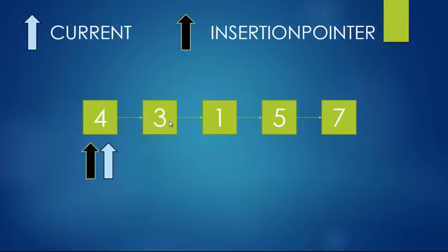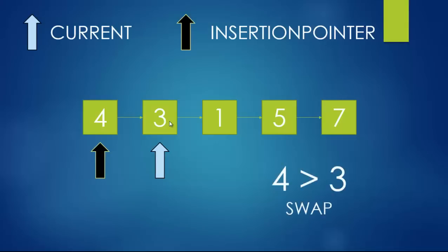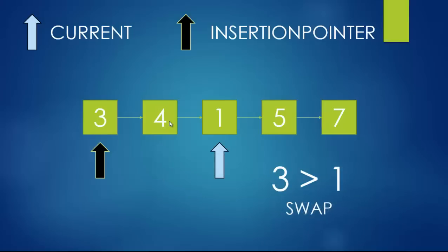What happens next is I initially increment current by one, which means I make current point to three, while the insertion pointer is still pointing to the head. Immediately after, I start my conditional checking: is four greater than three? It is, so I need to swap it. Then I check again: is three greater than four? It is not, so I move further. I increment current by one, but the insertion pointer remains at the head.